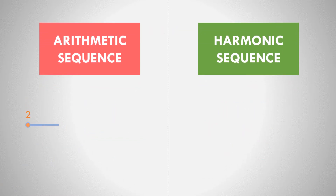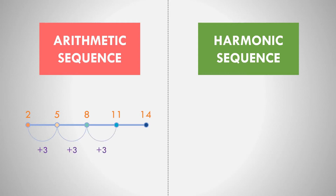An example of arithmetic sequence is 2, 5, 8, 11, and 14. If we get the common difference — second term minus the first term — so 5 minus 2, the answer is 3. So the common difference from the first up to the last term is equal to 3.